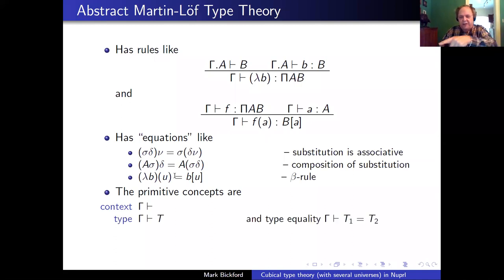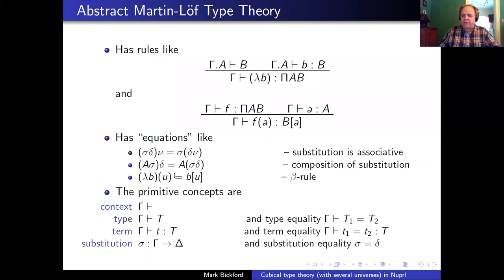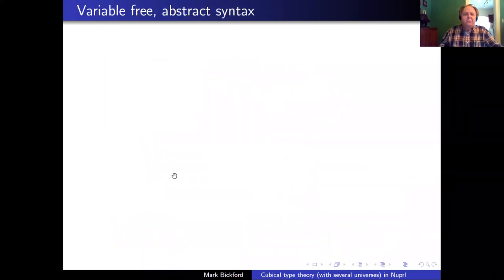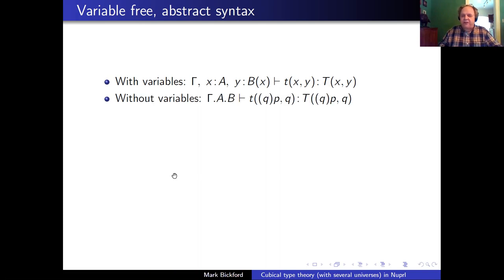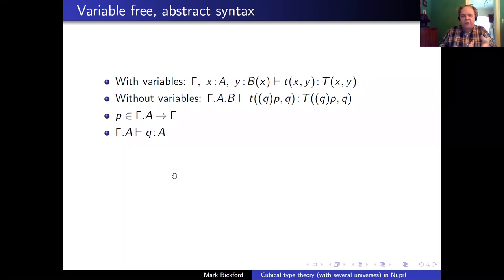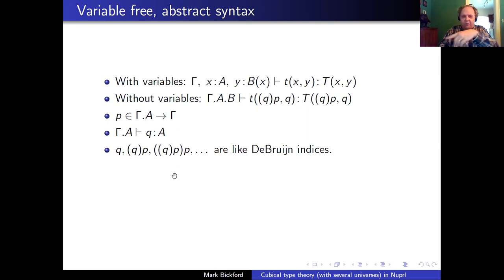Notice this syntax doesn't have variables. Normally in type theory you'd have a context where you have variables x and y bound to types, and your terms and types would have those variables. But in this syntax, we just have this thing Γ.A.B, and then instead of x and y, we use expressions p and q. So p is a substitution that goes from Γ.A to Γ, and q is a term of type A in the context Γ.A. So the terms q, qp, qpp are like de Bruijn indices for the variables. Instead of having variables, we have these things. That's very nice for defining the semantics, but for actually doing proofs it's not very nice — you'd prefer to have the variables.